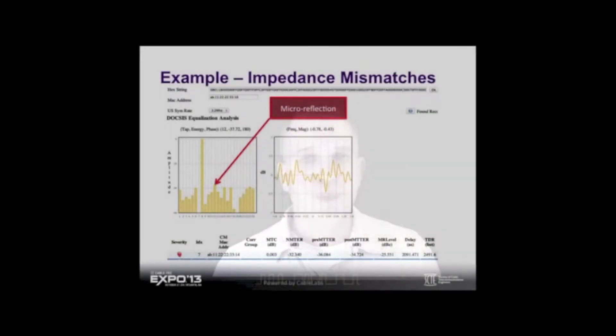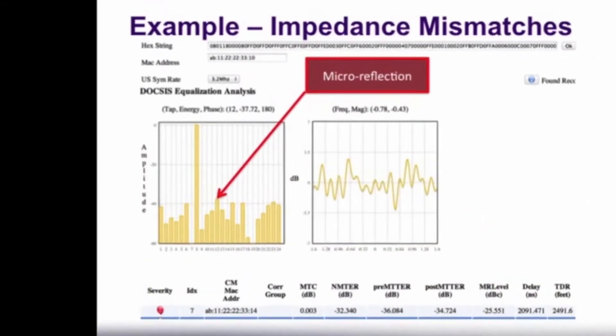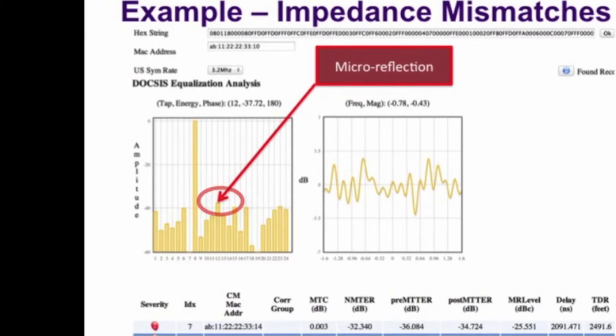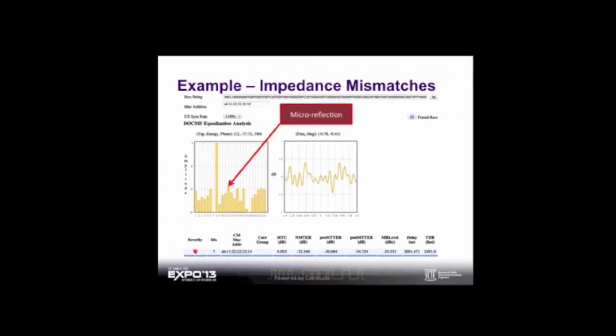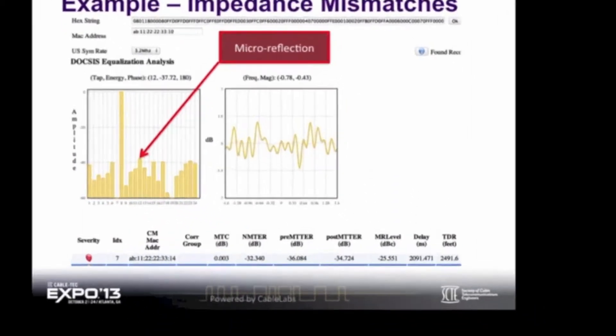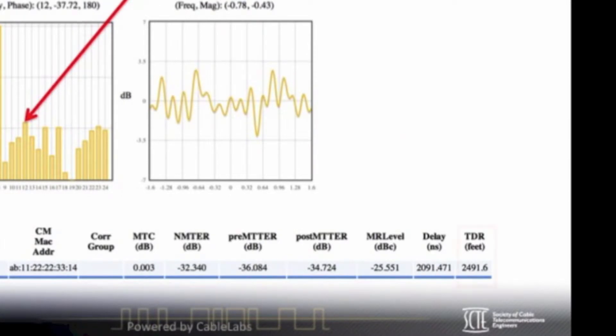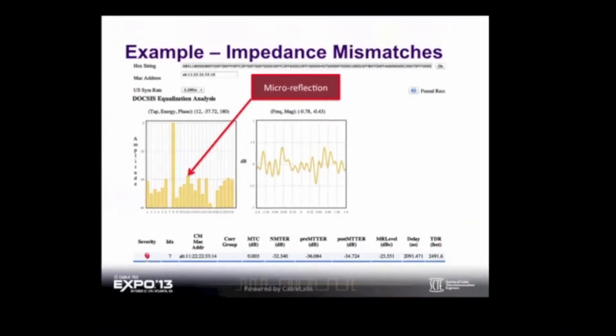Let's take a hypothetical example. A cable modem's pre-equalization data indicates that there is an impairment on the cable network. In addition, we can determine that the impairment is located roughly 2,491 feet away from the cable modem. This impairment has the CSR line lit up. However, you have the solution to remedy the situation and get all of your subscribers back online fast.